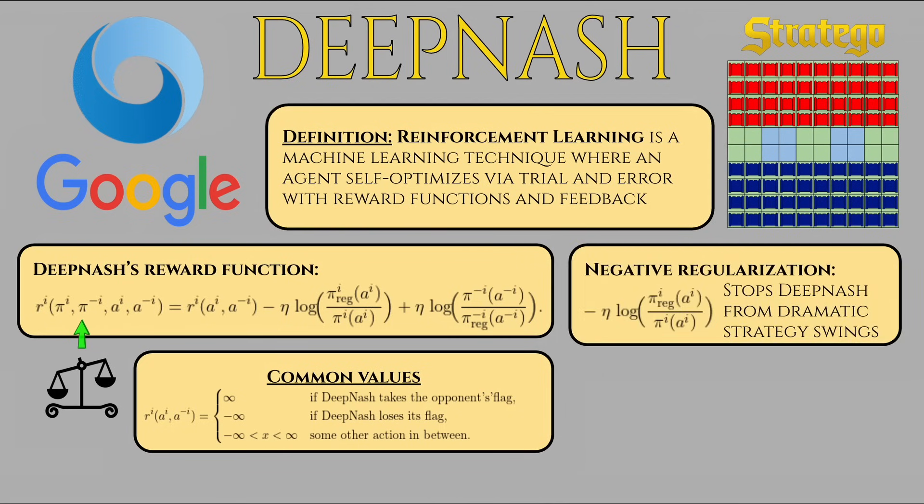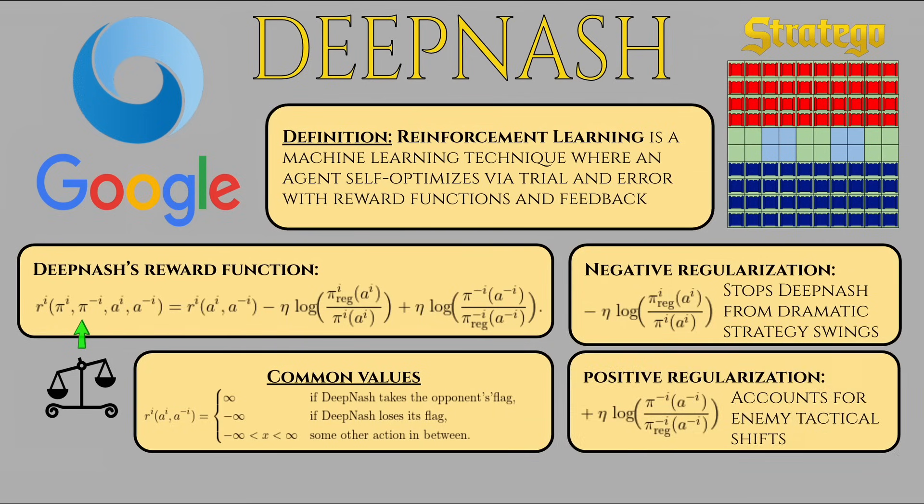The second term is called a regularization term. This term is negative and penalizes DeepNash for making moves that are too different from its baseline policy. This discourages it from making brash and unorthodox moves, such as putting its flag in the first row with no bombs around it. Mind you, that doesn't mean that unorthodox strategies are impossible. Remember, every action taken by the bot is drawn from a probability distribution. So while technically all moves are possible, it is just significantly more likely that the most probable moves will be chosen when you can have dozens of legal options at a time. The last term is also a regularization term, but from the perspective of the opponent. This gives a reward if the opponent's chosen move aligns with what DeepNash presumes to be its opponent's base policy. The higher this term is, this means DeepNash can feel confident it doesn't have to readjust its entire strategy either and can be in full control of the game.